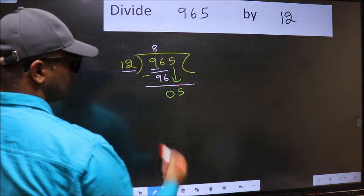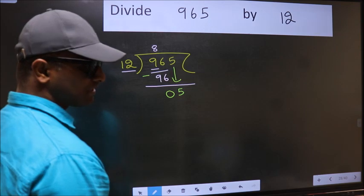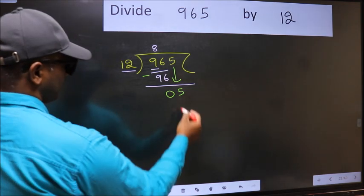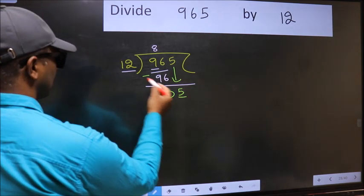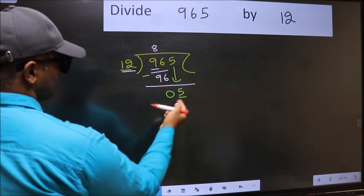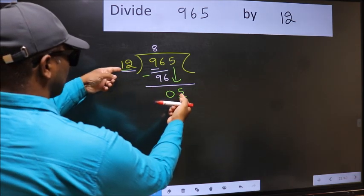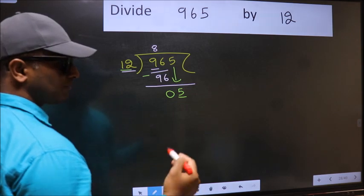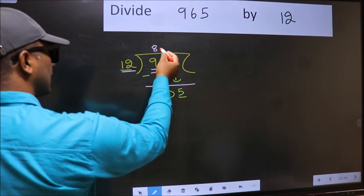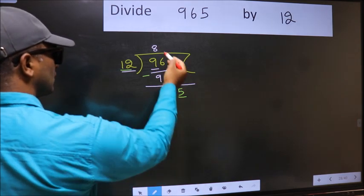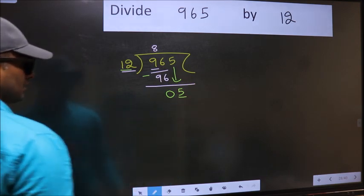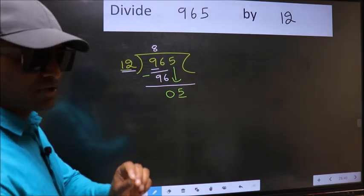After this step, the mistake happens. And the mistake is this: here we have 5 and here 12. 5 is smaller than 12, so what many do is they directly put a decimal point and take 0, which is wrong. Why is it wrong?